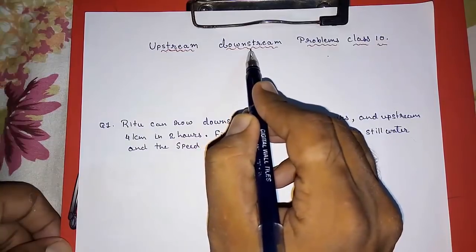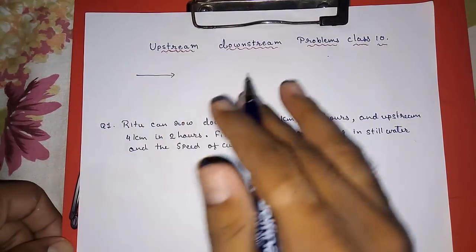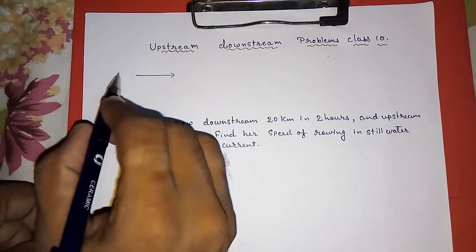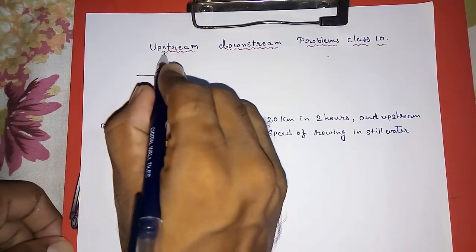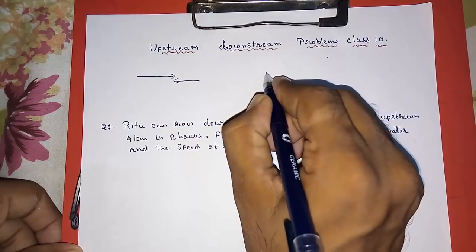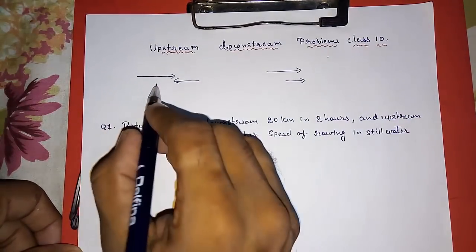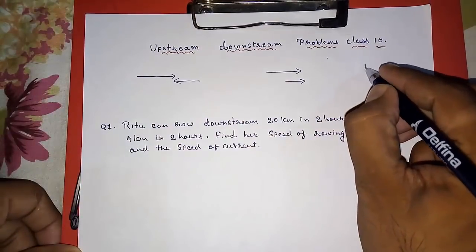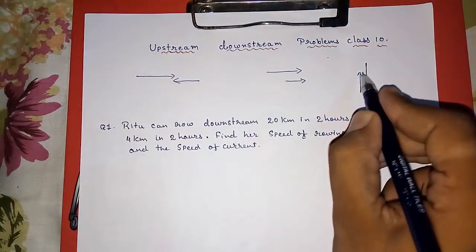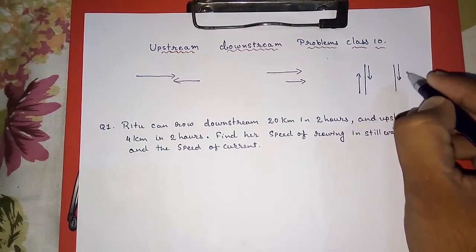Now, what is upstream and downstream? When you are going in a boat, either the waves will help you or the waves will oppose you. When you are going upside — we take that as upstream — the wave will oppose us. When you are going downside, the wave will help us. Simply, if you want to climb a 10-storey building, when you are climbing up — that is upstream — gravitation will oppose you.